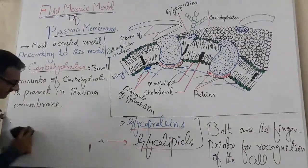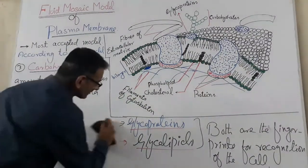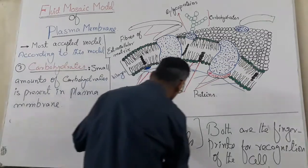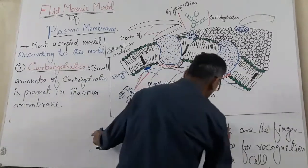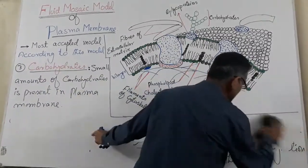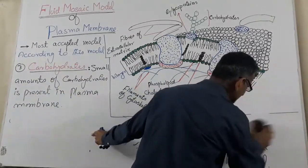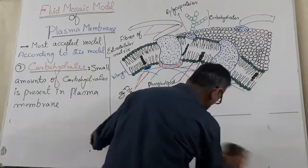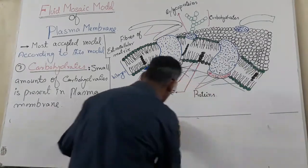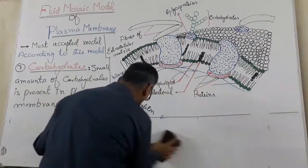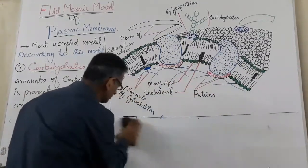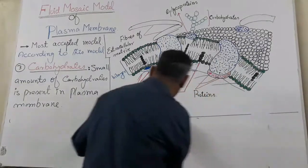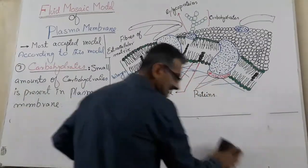Number 4: Cholesterol. Cholesterol is also present in the plasma membrane of the eukaryotic cell. Cholesterol is not present in the bacterial cell.